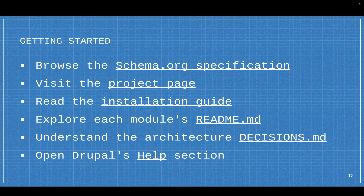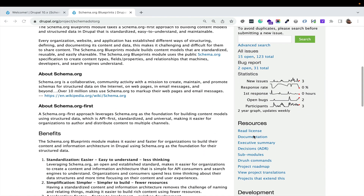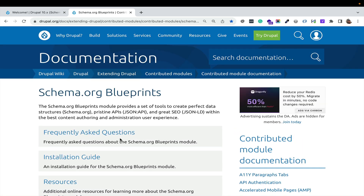Now let's get started. Browse the spec — you should go there, look at it, understand it. Definitely visit the project page, read the installation guide and FAQs. Each module has a readme markdown file available in multiple places. Understand the architecture decisions behind the module and open Drupal's help section. I'm going to go to the project page and emphasize that the documentation is right here. There's an FAQ and installation guide which will repeat most of the things we're talking about.